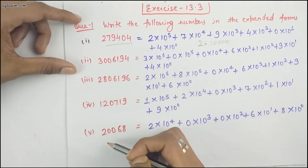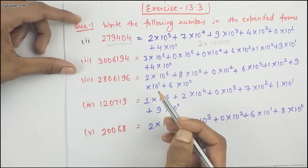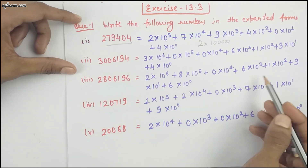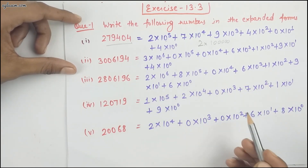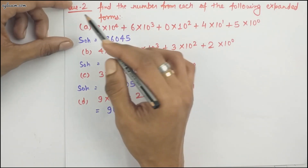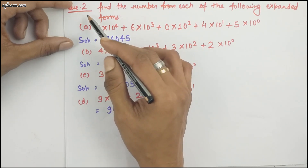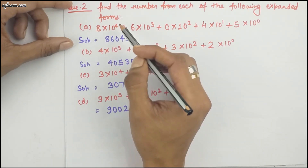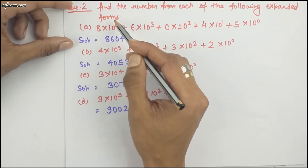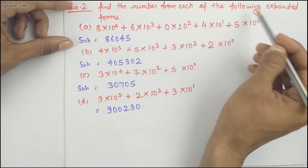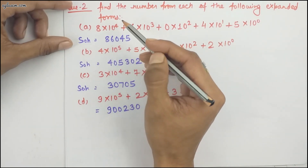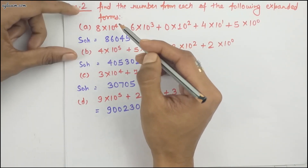Similarly, solve the other parts and let us know whether your answers match. Moving to question number 2, which is quite opposite to question number 1 — it says find the number from each of the following expanded forms. So we have to compress the expanded form.